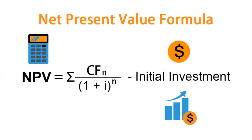The net present value formula involves cash flows and converting those cash flows. CF is the cash flow — that is the savings which we would get in the future — converted to present value by dividing by (1 + i) raised to n. If n is 3, it would be CF1 divided by (1+i)^1 plus CF2 divided by (1+i)^2 plus CF3 divided by (1+i)^3. That is the summation of CFn divided by (1+i)^n, where n ranges from 1 to the total number of years. From this we subtract the initial investment made today to get the net present value.